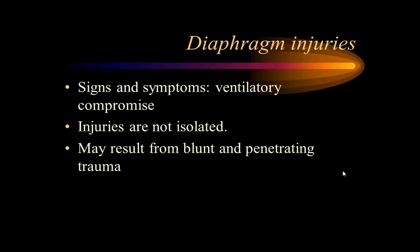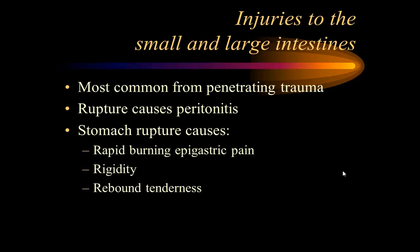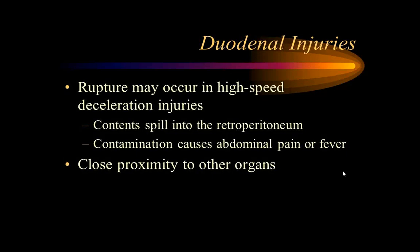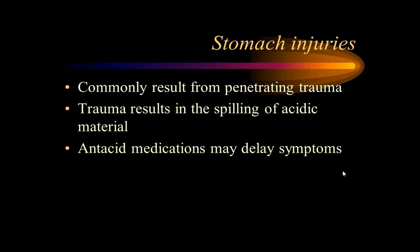Diaphragmatic injuries occur in high-speed MVAs with improper seat belt use (lap belt only) — the patient folds over, pushing abdominal contents upward and tearing the diaphragm. CT scan can show stomach and intestines herniated into the chest wall, causing respiratory difficulty. Penetrating trauma can rupture the stomach, causing peritonitis with rebound tenderness and rigidity. Duodenal injuries occur in high-speed MVAs — the tethered duodenum gets torn, spilling acid and causing pain hours to days later.